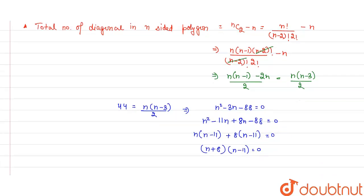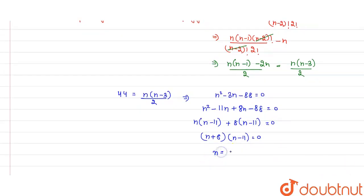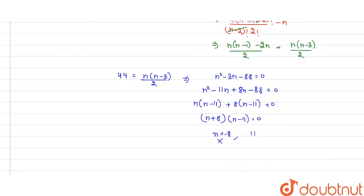From here we get n value equal to minus 8 and 11. The side of a polygon can't be negative, so the number of sides of the polygon equals 11. Thank you.